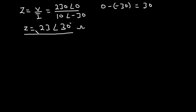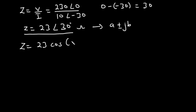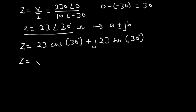Now let's convert Z from polar form to rectangular form, that is the form A plus or minus JB. It is going to be 23 cosine of the angle plus J times 23 sine of the angle — that is the phase angle. So Z equals 23 cosine 30, which is 19.92, plus J times 23 sine 30, which equals 11.50.